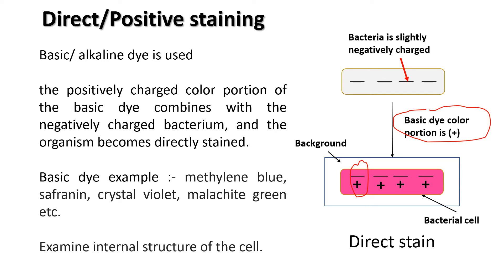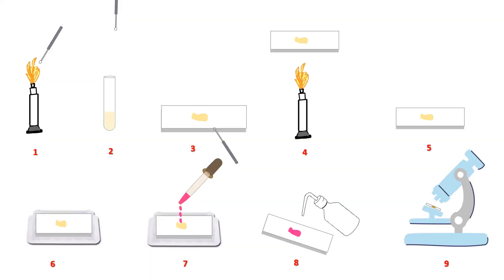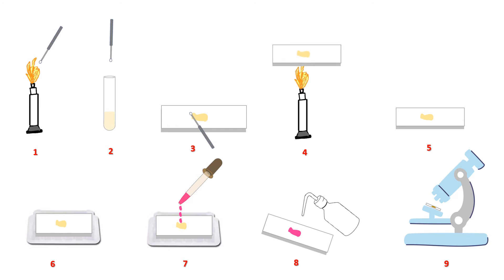Procedure of positive staining: First step, sterilize the inoculation loop over the flame of a Bunsen burner and cool it down for two to three seconds. Next step, dip it in a broth containing bacteria and take a loopful of culture. Third step, smear the culture on a glass slide, make a thin film, and allow the suspension to completely dry. Fourth step, quickly pass this slide over a flame three to four times to heat fix.